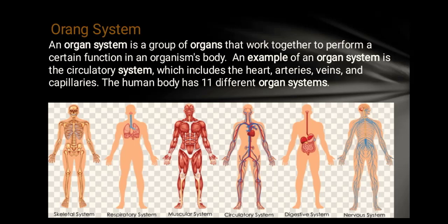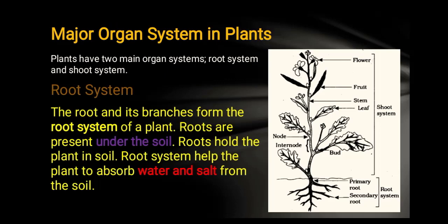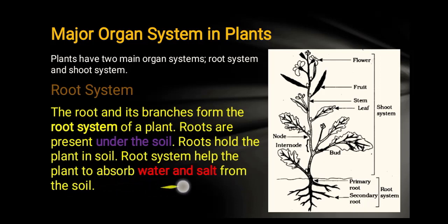In our body, 11 types of different organ systems work, each having different functions. Major organ systems in plants: there are two organ systems in a plant. The root system — the root and its branches form the root system of the plant. Roots are present under the soil. Roots hold the plant in soil, and the root system helps the plant absorb water and salt from the soil.